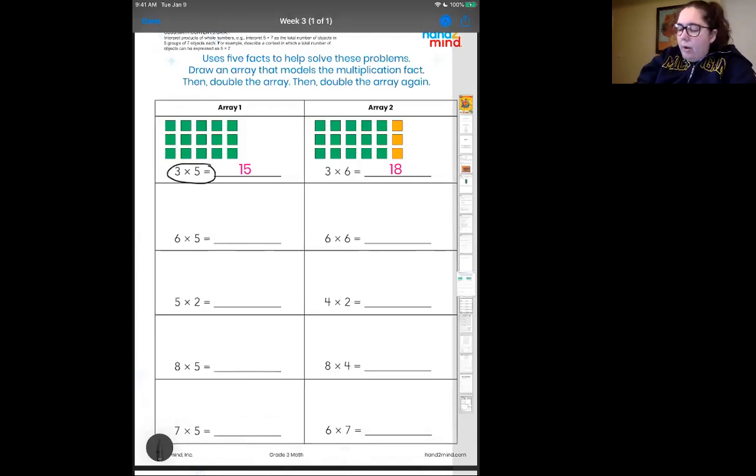That's what three times five really means. So here we have our three groups of five, one, two, three groups of five, and the total number is 15. So over here for three times six, what they did is they moved over the three times five array, and then they added one more group to make it three groups of six.